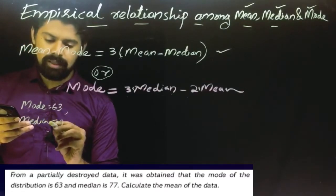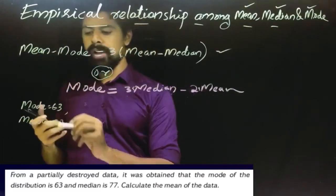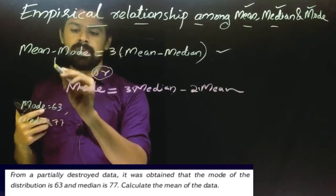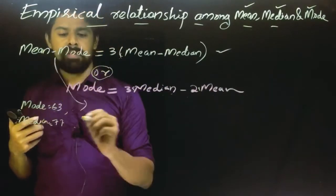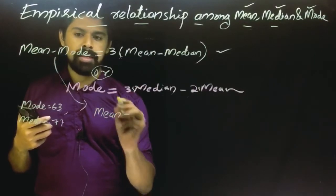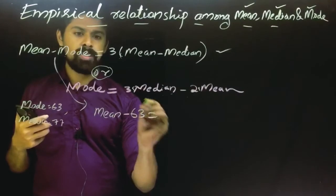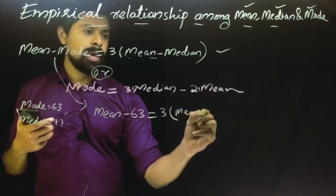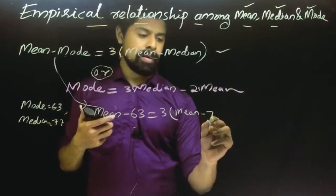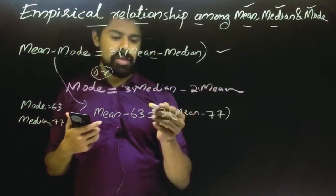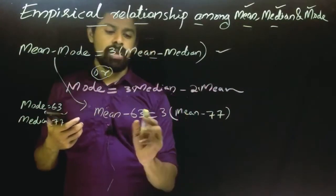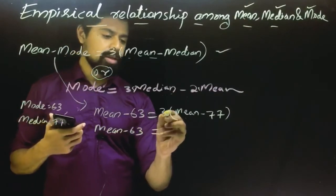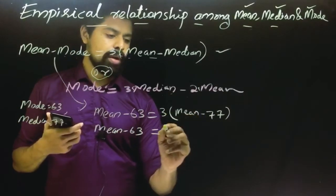We have median 77. We can use this formula to calculate the mean. Mode 63 is equal to 3 into median 77. Now, minus 63 is equal to 3 into mean. We can use this formula: mean minus 63 equals 3 into mean minus median 77.